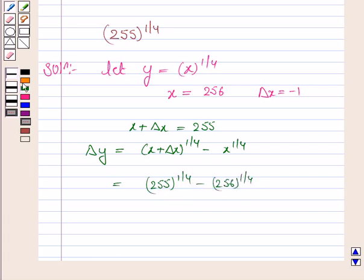So this implies 255 to the power 1 by 4 equal to delta y plus 256 to the power 1 by 4.